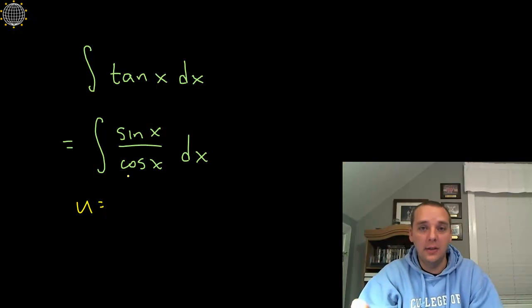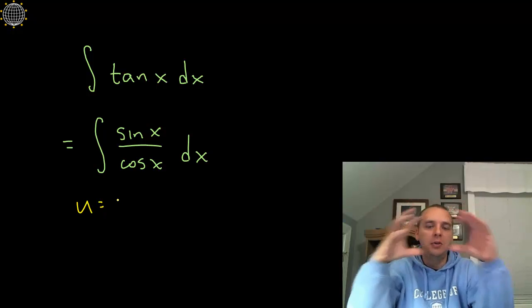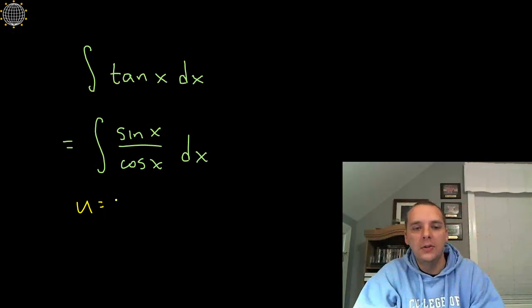If we decide this is log rule, we'll let u be the denominator because we're trying to fashion du over u. So u would be cosine x, and the du would be negative sine x dx.